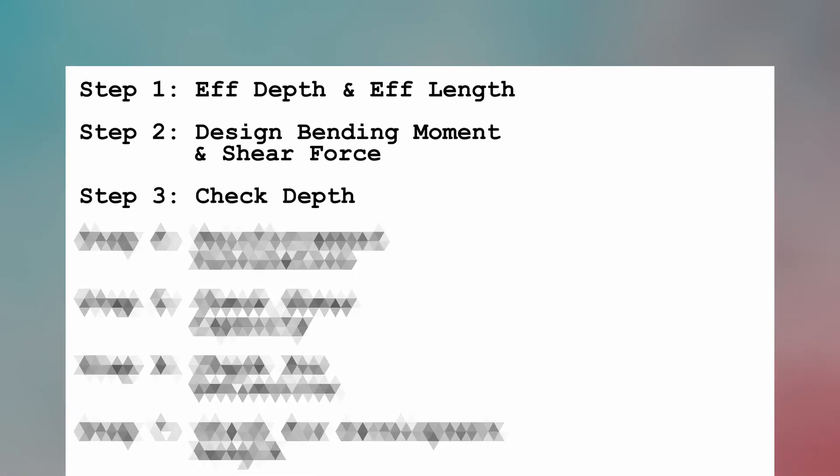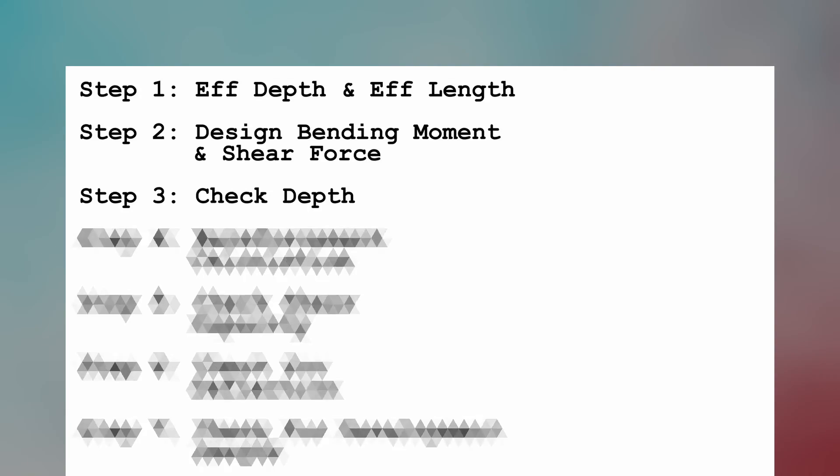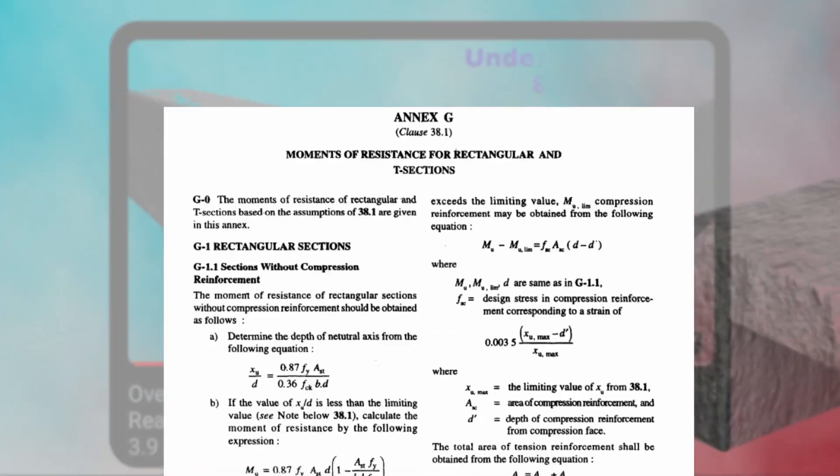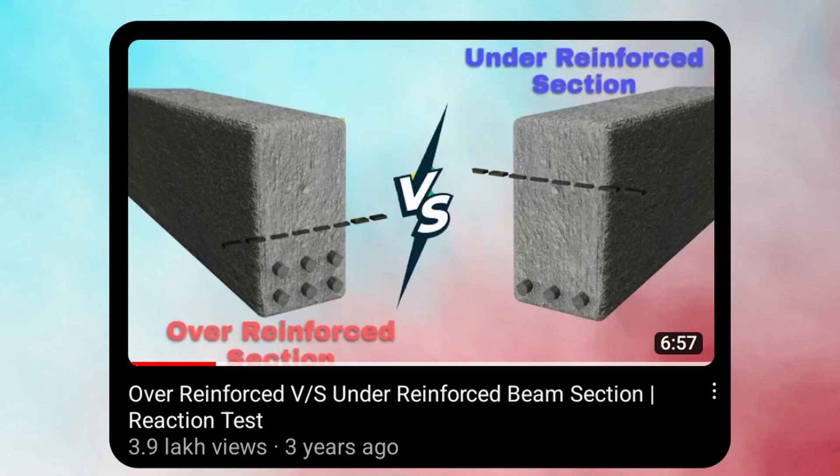Step 3 is to check for depth of slab, whether the provided depth is safe for the factored moment Mu by referring to this formula as per Annex G 1.1c, which is for balance section. You can watch a dedicated video to learn more about different types of section from here.